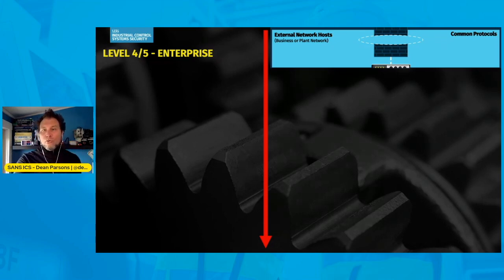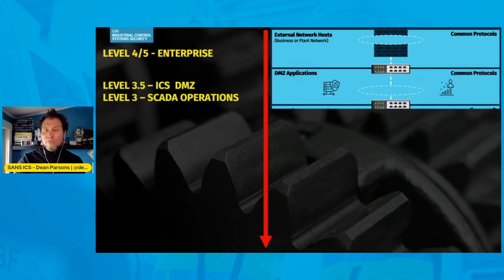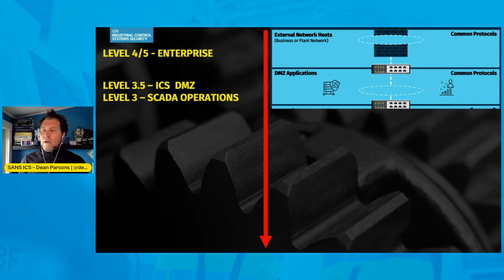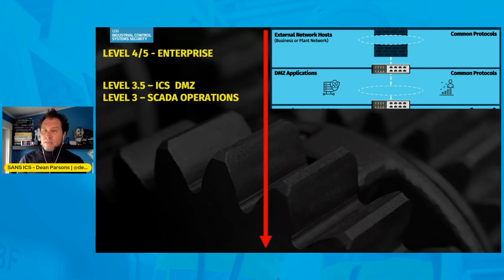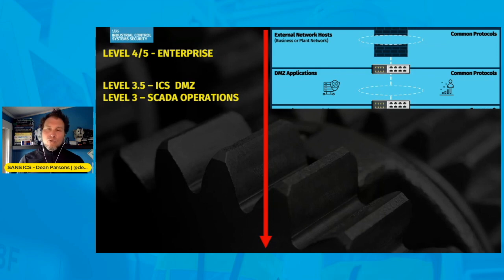Going down through the Purdue closer into the control environment, we see level 3.5 and level three. Level 3.5 could be considered your industrial control system demilitarized zone, or DMZ — usually where you'll find applications and services for OT or ICS, like your data historian, possibly with IT access from the enterprise, and also possible remote access and jump boxes at this level. Common protocols can also be seen at level 3.5, but as we go deeper inside the ICS, more ICS-specific and even proprietary protocols appear.